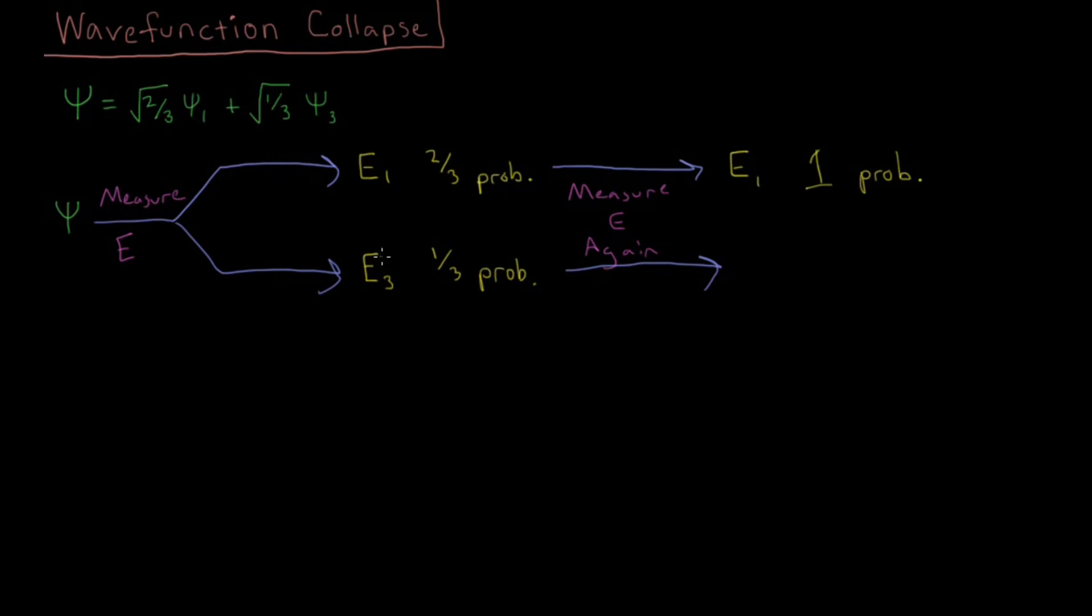And similarly, if you measure the energy and you get E3, the energy of the third eigenstate, then measuring it again, there is a 100% chance that you get E3. And this extends to if we had four, five, a hundred different possibilities. Whatever we measure the first time, we're going to measure again the second time.